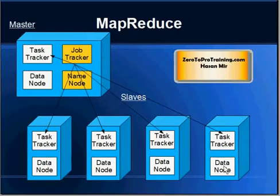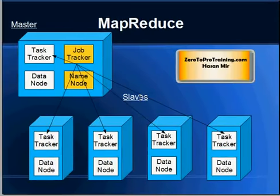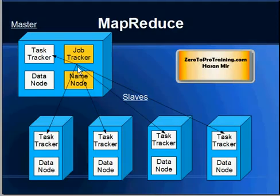So instead of performing one big computation on one big dataset, smaller computations are performed on each small piece of data. The result from each smaller computation is then gathered and aggregated, and this becomes the answer to the query. This results in much faster performance compared to dealing with big data directly. This was the technology and innovation that Google developed to win the battle of search engines.